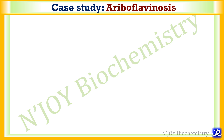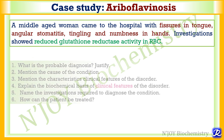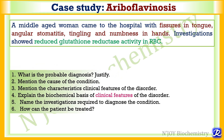Now let's see a case study of vitamin B2 deficiency. A middle-aged woman came to the hospital with fissures in the tongue, angular stomatitis, and tingling and numbness in the hands. Investigation showed reduced glutathione reductase activity in RBC. This is a clear-cut case of vitamin B2 deficiency, that is riboflavinosis. The clinical features involving the mucous membrane and the reduced erythrocyte glutathione reductase activity all point towards the diagnosis of riboflavinosis.